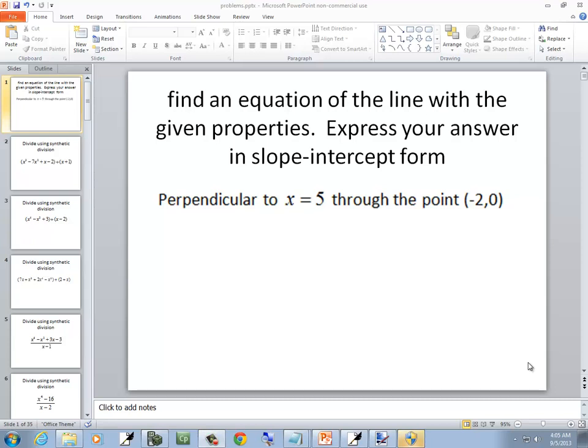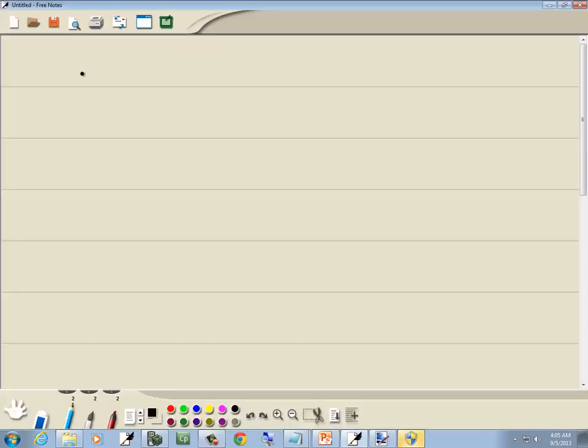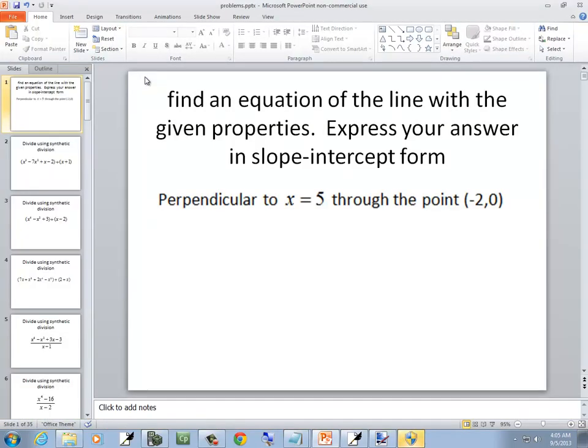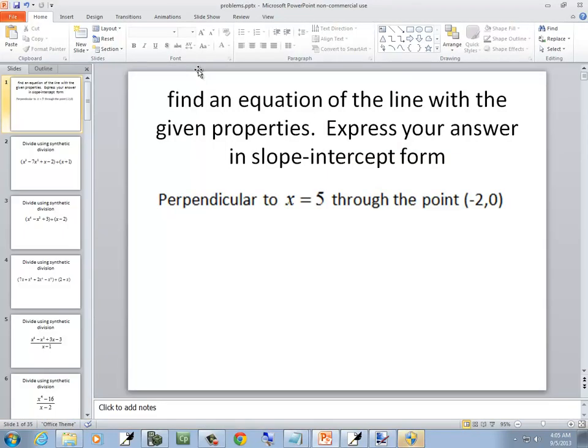In this problem, we want to find an equation of a line with the given properties. Express your answer in slope-intercept form. And they're telling us that it's perpendicular to x equals 5, and it passes through the point negative 2, 0.